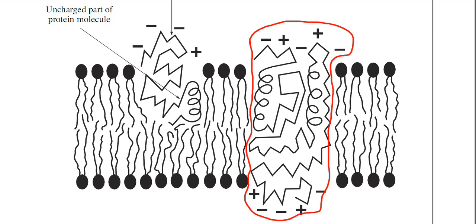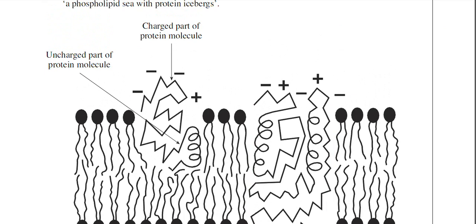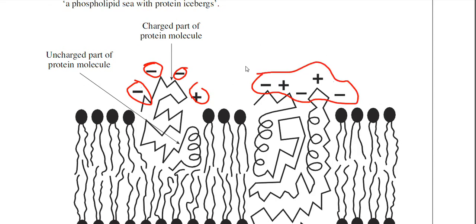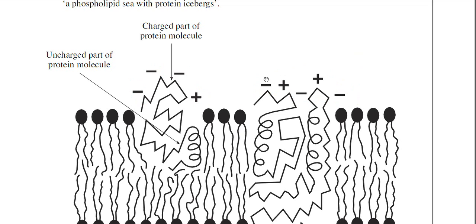The examiner has put charged symbols around various parts of the protein, which are very important. Any region of a protein that's charged means it cannot interact with the hydrophobic tails of the cell membrane. These are the hydrophobic tails of the phospholipids.